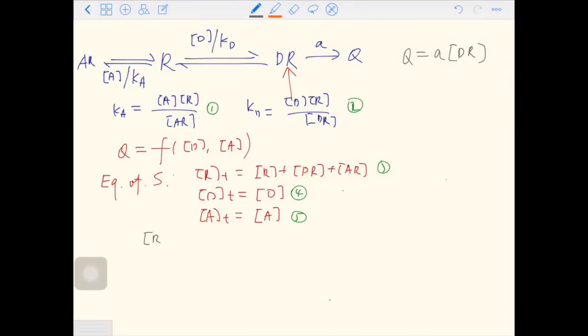Let's rewrite equation number three. Rt on the left. We don't have to make any change of it because Rt is a constant in the system. We have to replace R with something else. So we use equation number two to do the substitution. R is Kd times DR over D. That is good because we have Kd, which is a constant, DR, which is what we're looking for, and D, which is an independent variable, and plus DR plus AR.